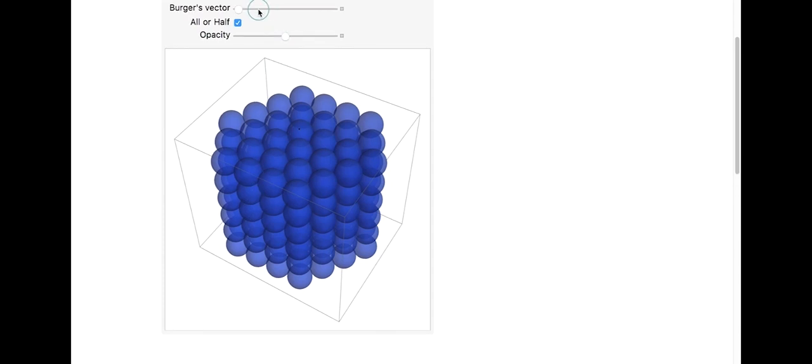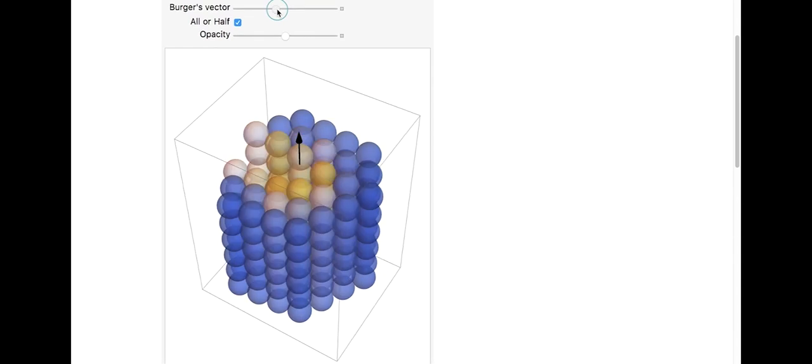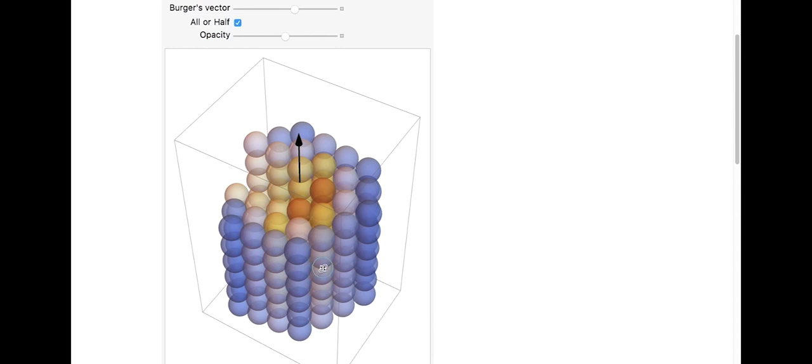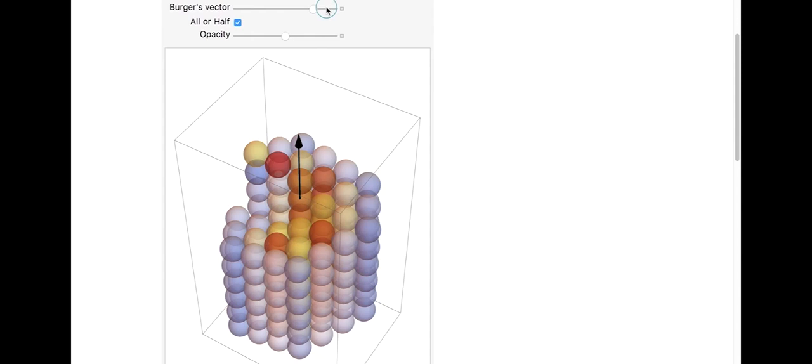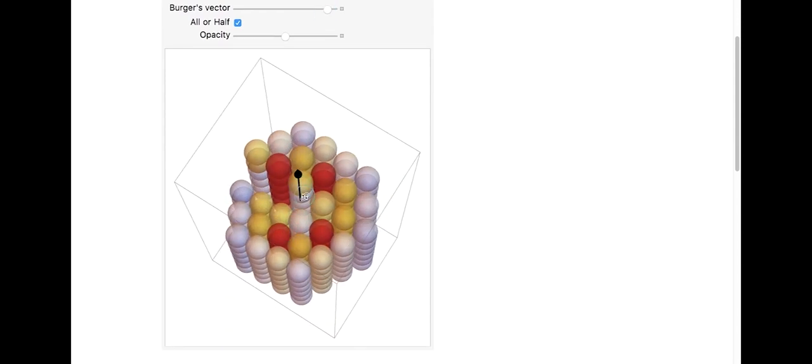As I introduce my Burgers vector, the energy does clearly increase right around the center. And what you'll also notice is that atoms are becoming less blue, which means that the energy of all the atoms is kind of increasing. And something cool happens if I keep increasing the magnitude of the Burgers vector. What I find is that I have this area of yellow, kind of higher energy, and an area of much higher energy right outside of that. And then the energy starts to decrease again.